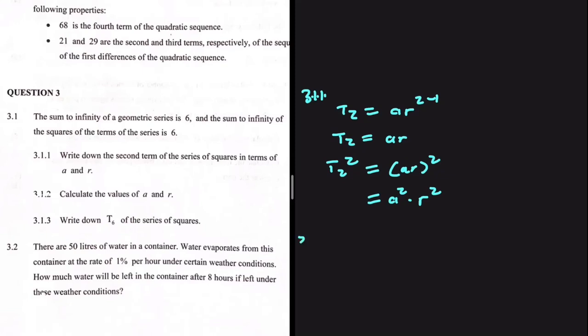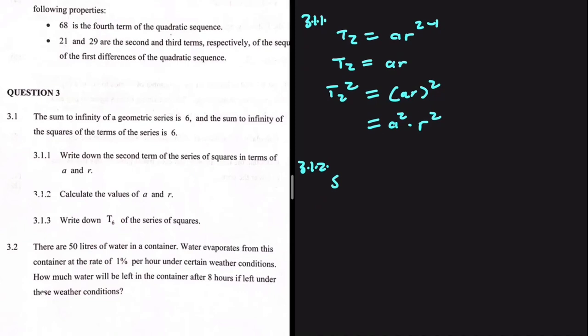Let's look at 3.1.2: find the values of A and R. This question is for 6 marks. The sum to infinity of a geometric series is A divided by 1 minus R. We are told that the sum to infinity is 6, so we have 6 equals A divided by 1 minus R.